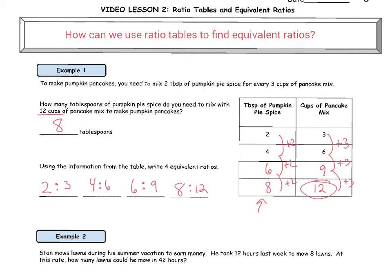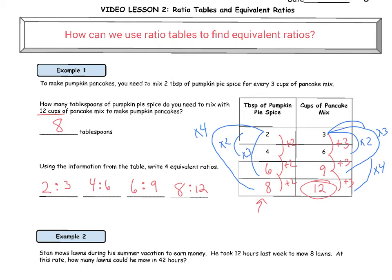Similar to repeated addition, we can also see relationships between equivalent ratios using multiplication. Two times two is four. Whatever I do to the left side I have to do to the right — three times two is six. Two times three is six, and three times three is nine. Lastly, two times four is eight, and three times four is twelve. So we can make equivalent ratios either through repeated addition or multiplication.